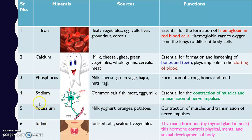Potassium is also important for the nervous system. It is present in milk, yogurt, oranges, and potatoes. It also helps in the contraction of muscles and the transmission of nerve impulses.